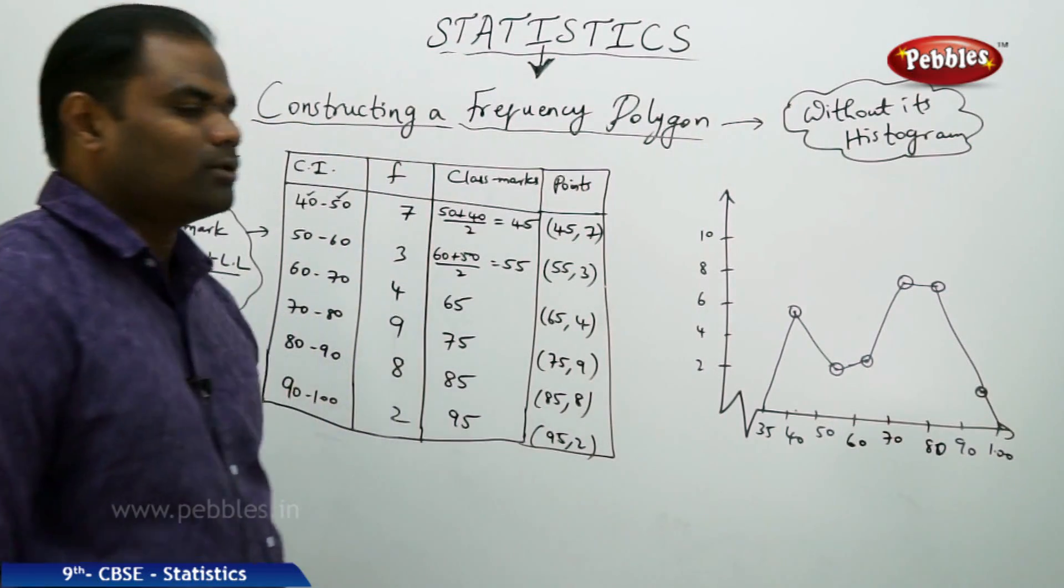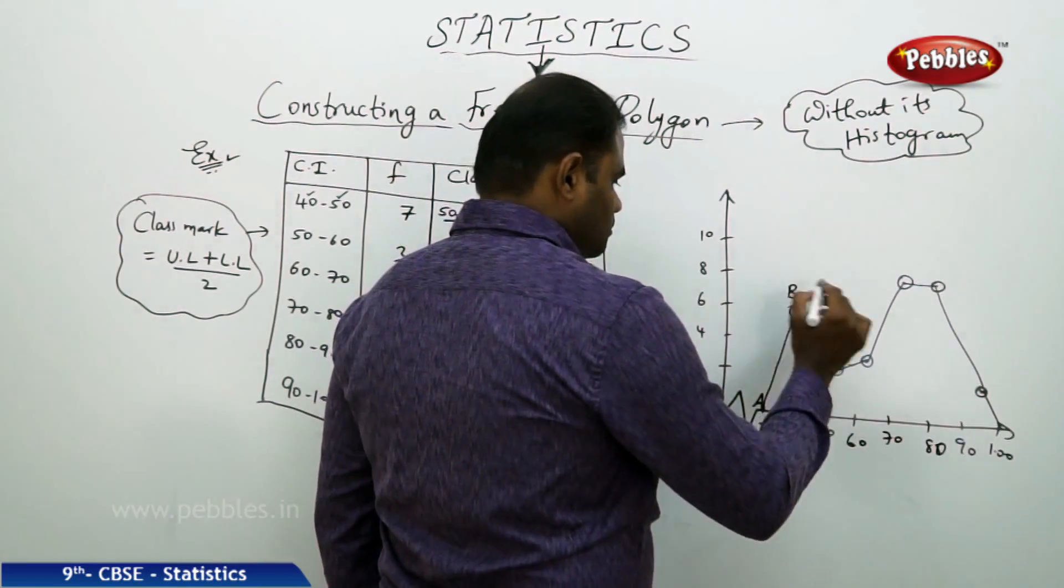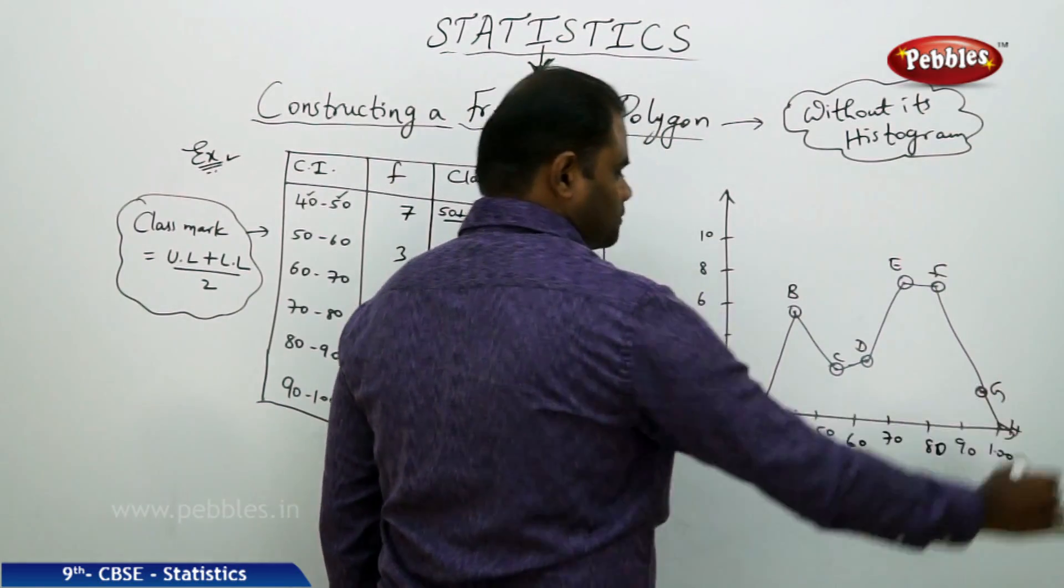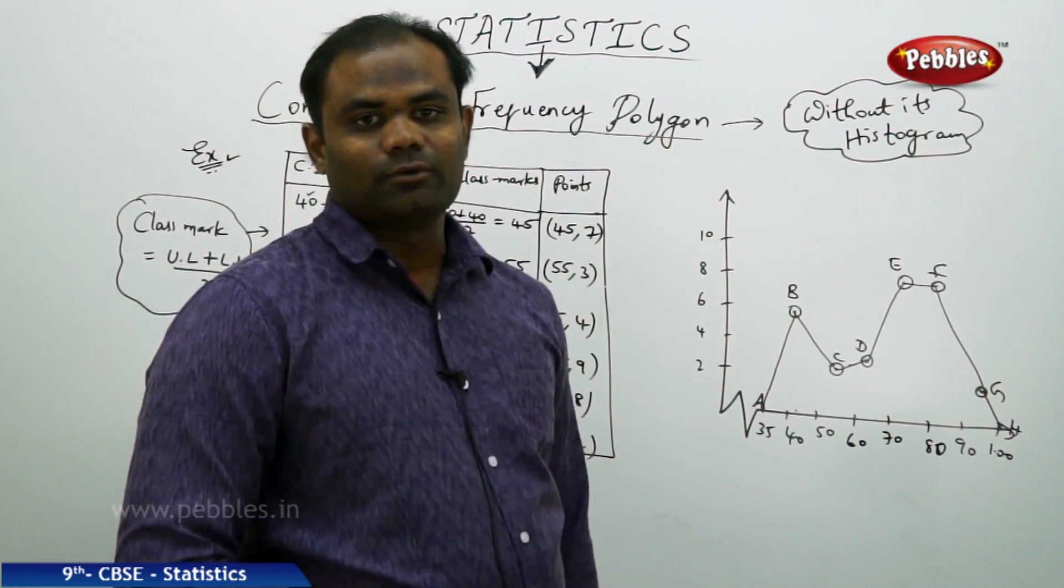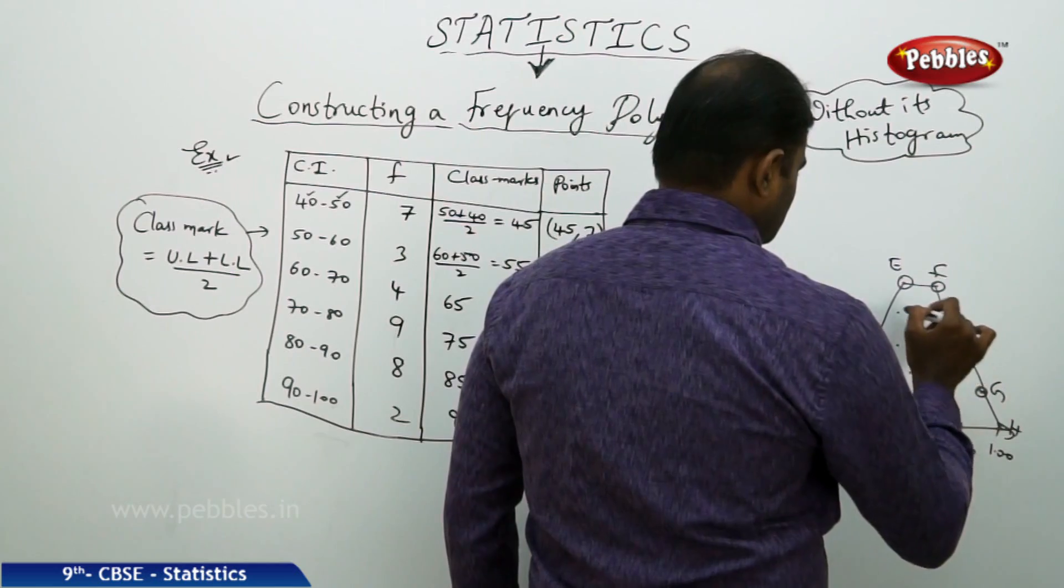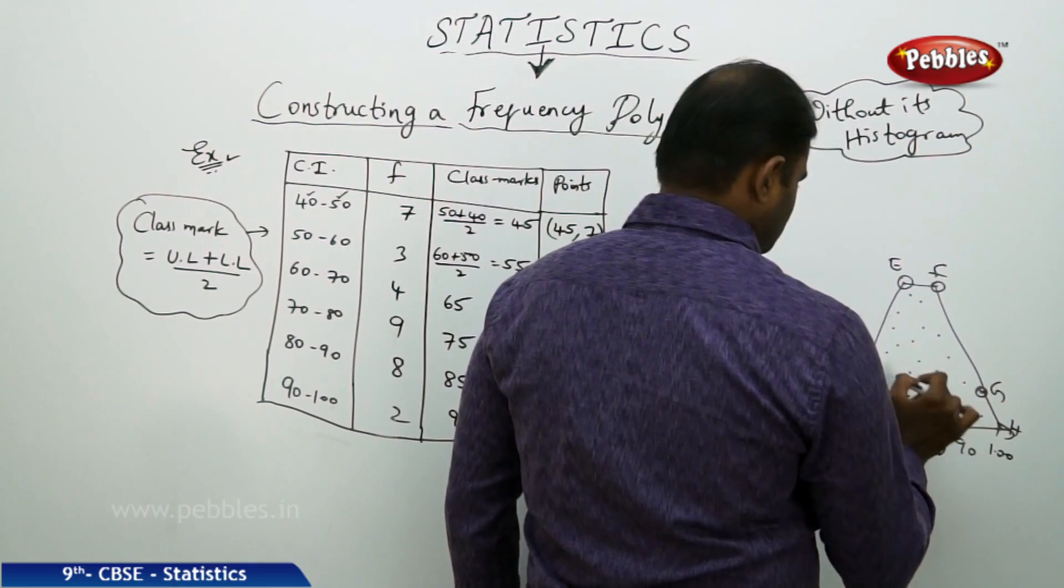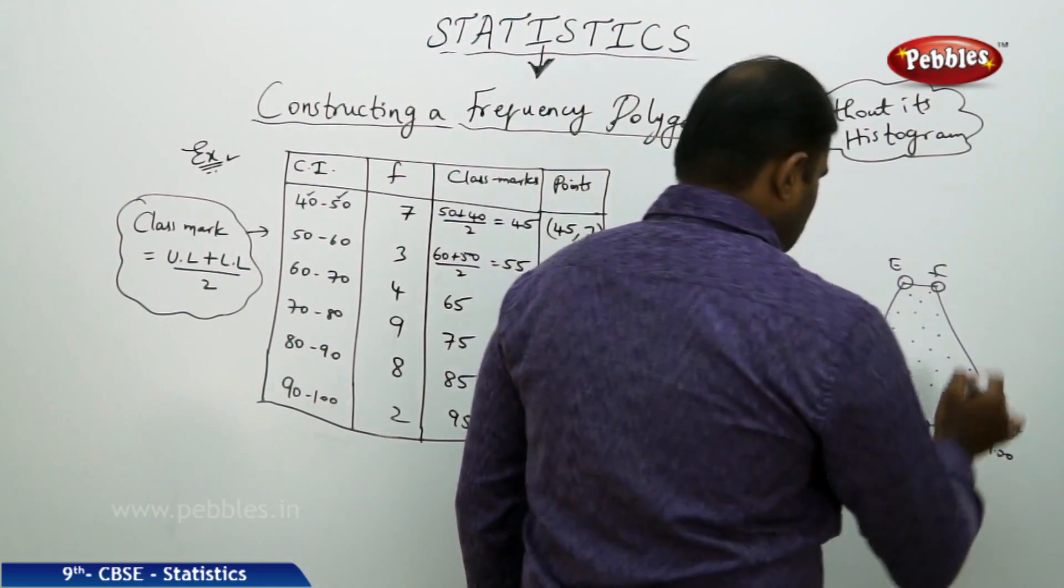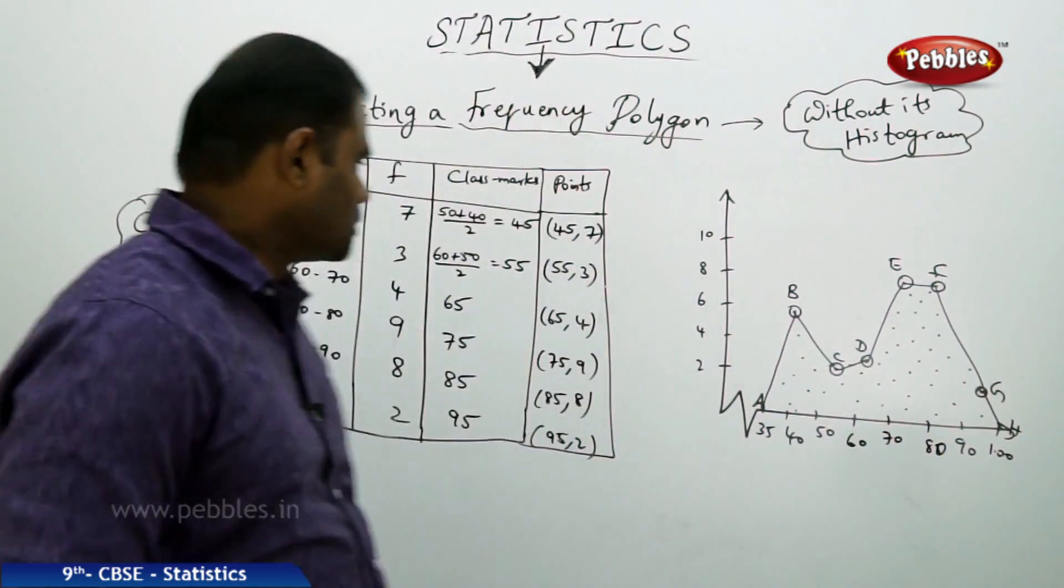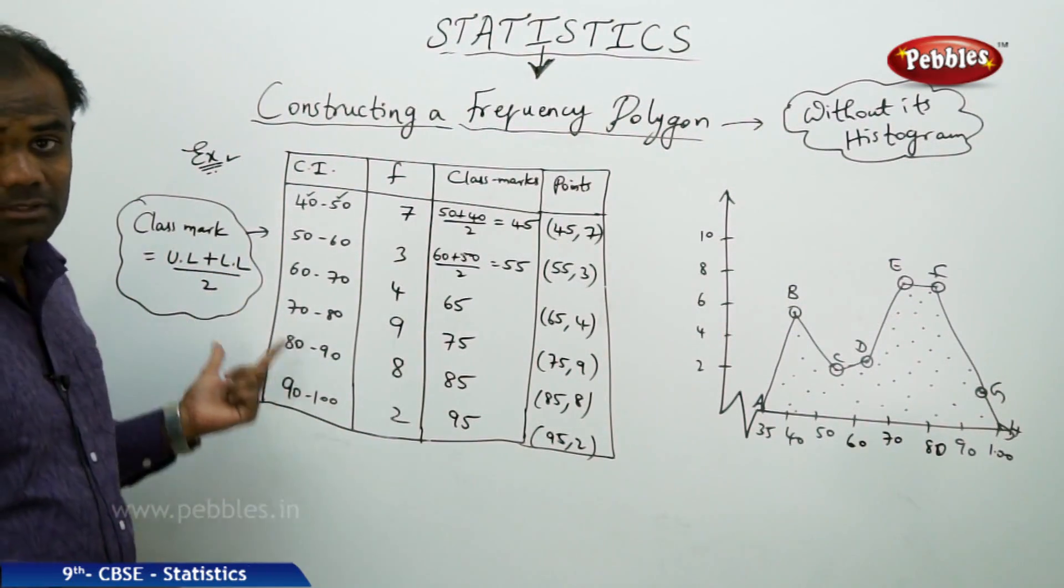I get a polygon which is called a frequency polygon. A, B, C, D, E, F, G, H is a polygon which is a frequency polygon given by this region. Frequency polygon constructed without the help of histogram using the class marks. Class mark equals upper limit plus lower limit by 2.